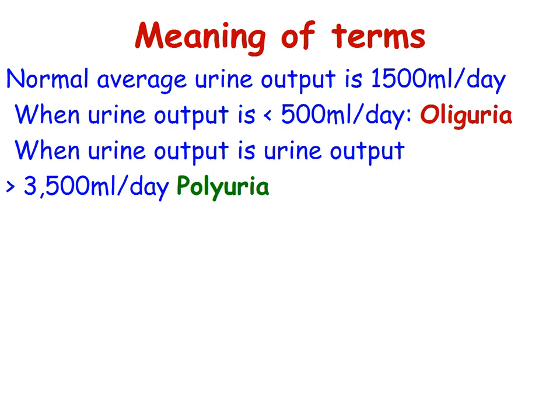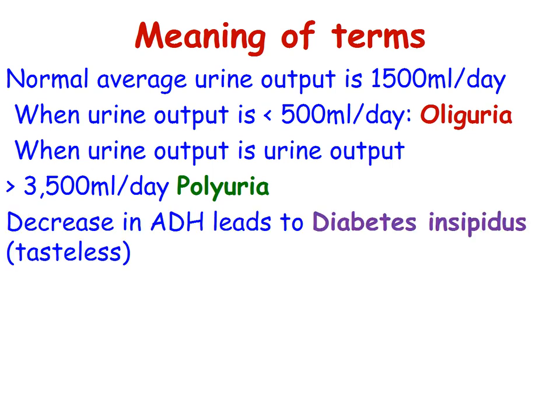Diabetes insipidus means tasteless, caused by less ADH, leading to diabetes insipidus. Diabetes mellitus refers to sugar in the urine, so it appears sweet.